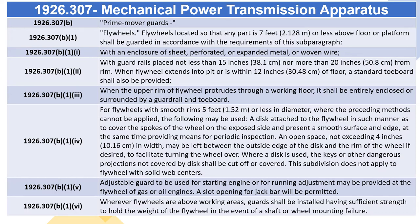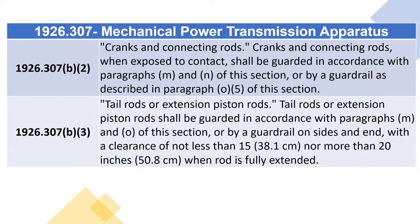For flywheels with smooth rims five feet or less in diameter where preceding methods cannot be applied, a disc may be attached to the flywheel to cover the spokes and present a smooth surface. An open space not exceeding four inches (10.16 cm) may be left between the outside edge of the disc and the rim. Where a disc is used, keys or other dangerous projections not covered by the disc shall be cut off or covered. 1926.307(b)(1)(v): An adjustable guard may be provided for starting an engine or running adjustments at the flywheel of gas or oil engines. 1926.307(b)(1)(vi): Where flywheels are above working areas, guards shall be installed having sufficient strength to hold the weight of the flywheel in the event of a shaft or wheel mounting failure.